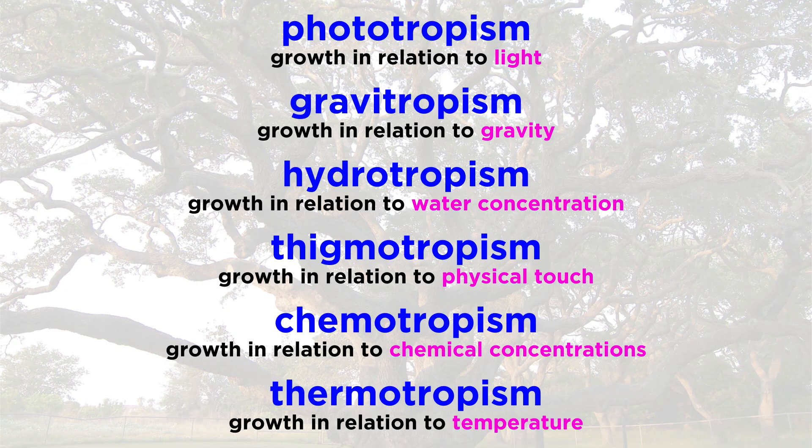Chemotropism is growth in relation to concentrations of certain chemicals. Thermotropism is growth in response to temperature. Each of these tropisms is important in maximizing the survival and therefore reproductive success of a plant.